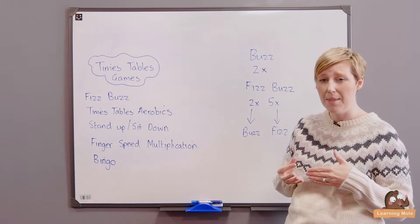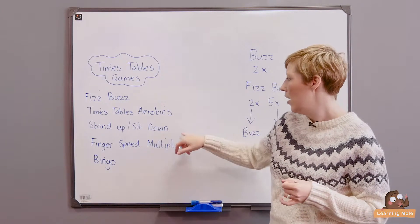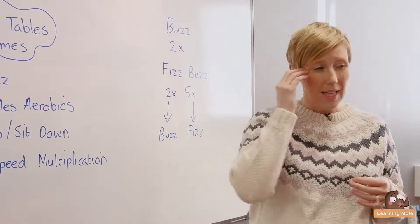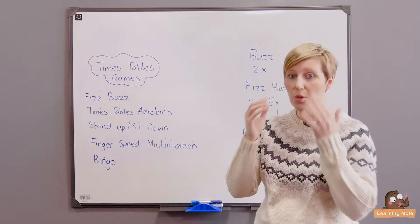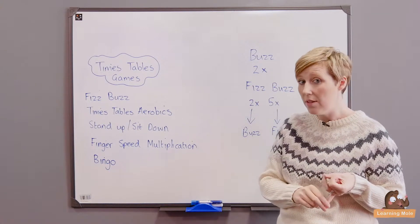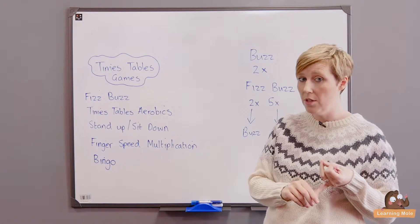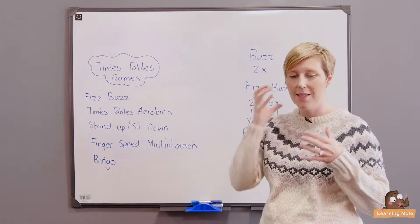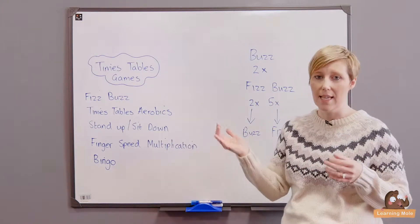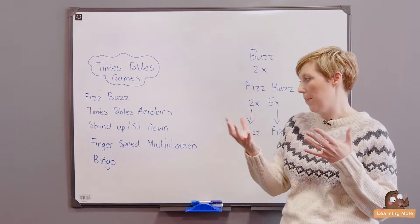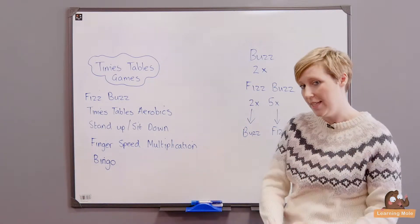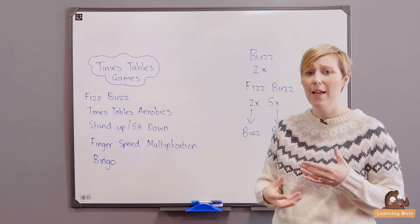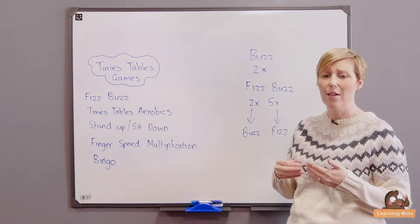So I will say to the children six and they must think, is six in the two times tables? How do I know? They will be using the fact that they know that all even numbers are multiples of two, and they will maybe be thinking, counting in twos: two, four, six. All that lovely maths is going on in their heads which is great. So I will say six, they'll all have to stand up. If I say three they sit down. Nine, stay sitting. Ten, stand up. So a really good way of just exploring those mathematical patterns as well.